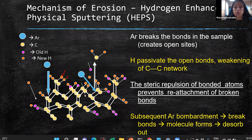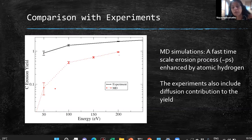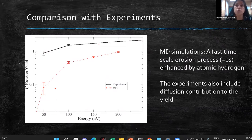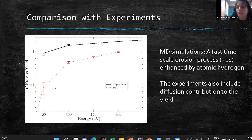From the MD simulations, with proper sample preparation and bombardment, we showed the mechanism: argon breaks carbon-carbon bonds, hydrogen atoms passivate the open bonds via steric effects, which weakens the carbon-carbon network. Earlier there was a fully coordinated CC network; now there are mostly singly coordinated carbon atoms, and the hydrogen-rich molecular chains prevent bond reconnection, leading to molecule emission. One can see the orange-colored newly added hydrogen atoms sitting and passivating the open bonds in the simulation visualization.